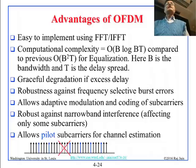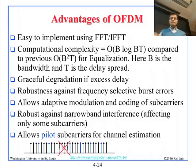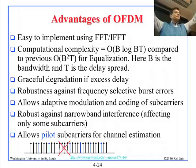OFDM allows adaptive modulation and coding of subcarriers. Each frequency is modulated differently depending on its own interference conditions. If there is heavy interference on one channel, it uses BPSK; another might use QPSK; another 16-QAM, and so on.